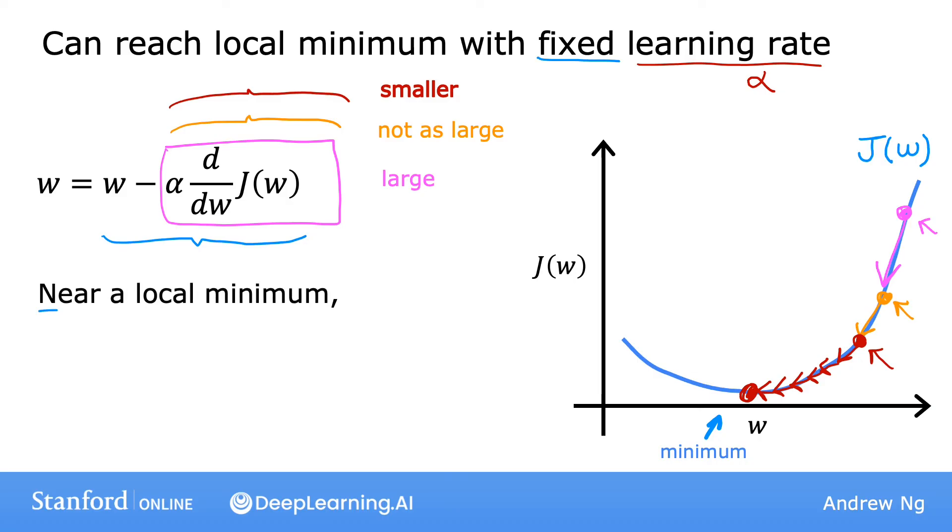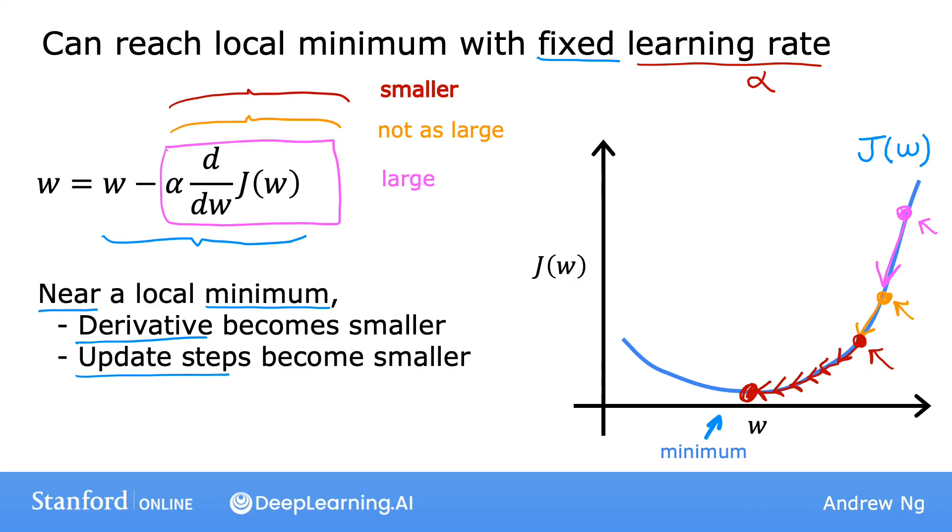So just to recap, as we get nearer a local minimum, gradient descent will automatically take smaller steps. And that's because as we approach the local minimum, the derivative automatically gets smaller, and that means the update steps also automatically get smaller, even if the learning rate alpha is kept at some fixed value.